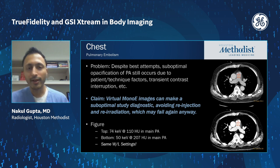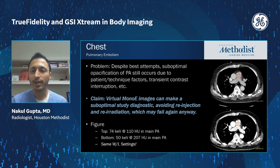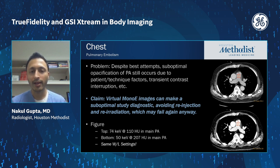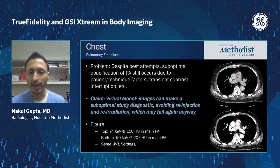Chest imaging is another area where we use GSI or dual energy, more for the virtual monoenergetic imaging than for the iodine maps. Occasionally, despite best efforts, you get a suboptimal bolus in the pulmonary artery. Here's an example: the 120 kVp-like image shows only 110 Hounsfield units in the pulmonary artery. Normally we would have to re-inject the patient and try again, but here we simply lower the keV to 50 keV and now have 207 Hounsfield units, salvaging an otherwise non-diagnostic exam.